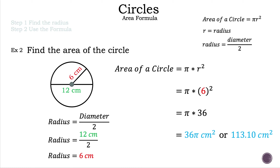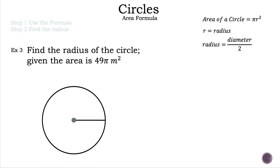Now let's look at example three. The question is a little different: find the radius of the circle given the area is 49 pi meters squared. We're trying to find the radius, not the area, so we're working backwards. The steps are: step one, use the formula; step two, find the radius. We'll definitely need the formula, so let's write it down — the area formula for circles is pi times radius squared.